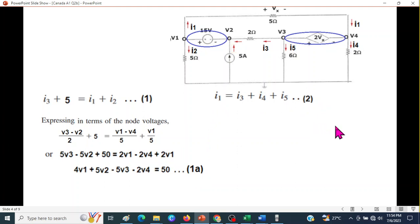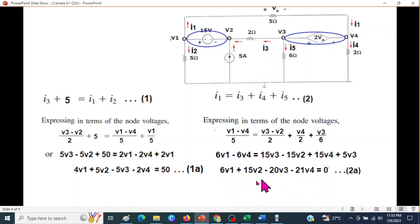Similarly, this one also will convert in voltage form. So, I1, we have already learned from here. It is V1 minus V4 divided by 5. Similarly, I3, we also done V3 minus V2 divided by 2. I4 is this one. V4 divided by 2. And I5, this one, V3 divided by 6. And here also, we multiply by LCM, simplify. So, this is our second equation. So, we have got two equations, two voltage equations due to the current, KCL.